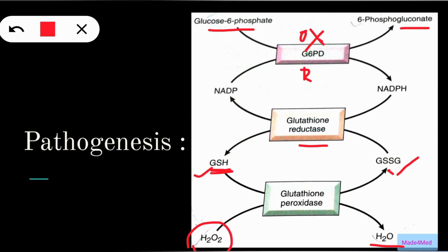Due to the deficiency of G6PD, there is an increase in the level of H2O2, which causes damage to the RBC. Other reactive oxygen species in the RBC also cause damage to the cell.